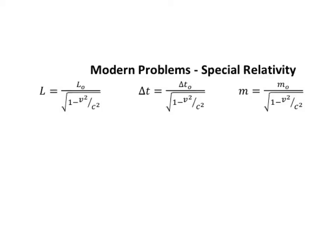Hello, class. Are the modern physics questions giving you a special kind of problem — relatively? Well, it all hinges on these three equations, which are essentially the same equation. One refers to the length of a moving object, one refers to the time that elapses for a moving object, and the third for the mass.